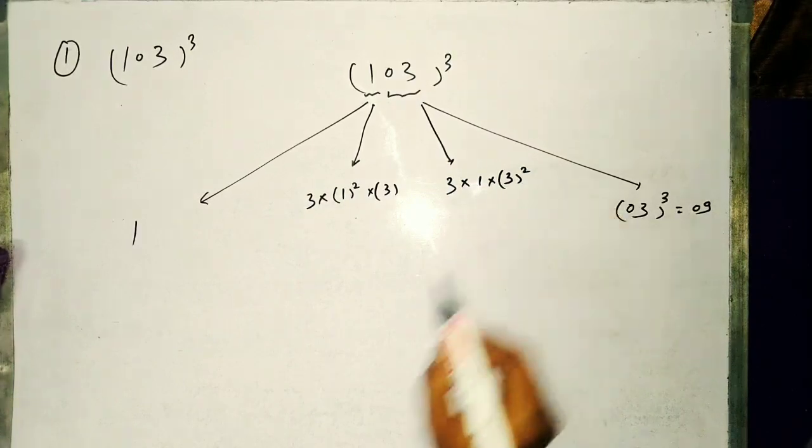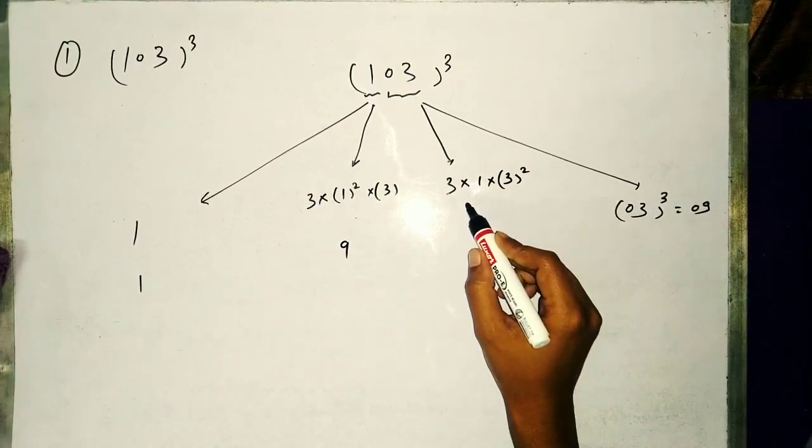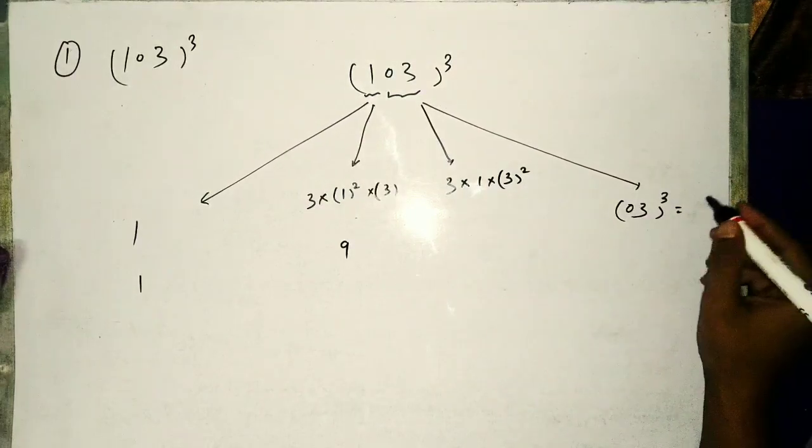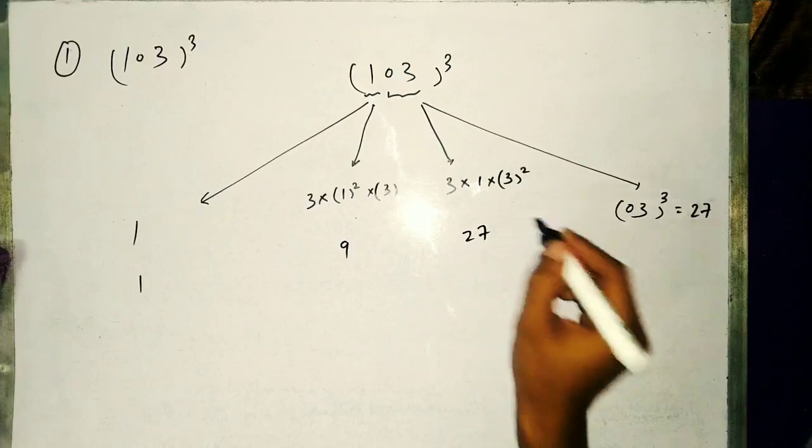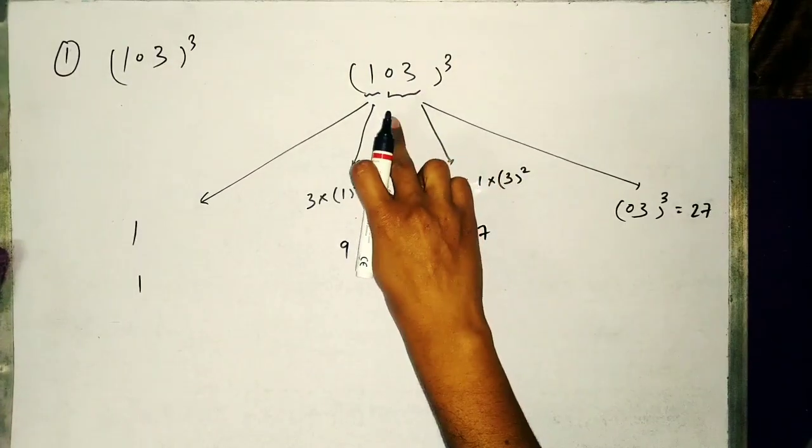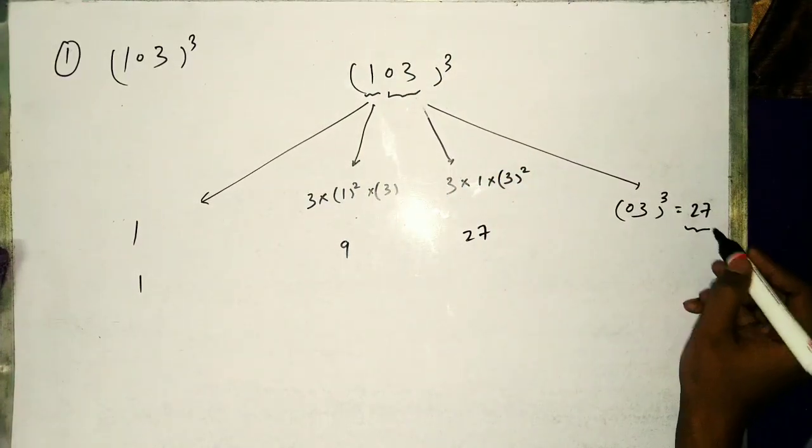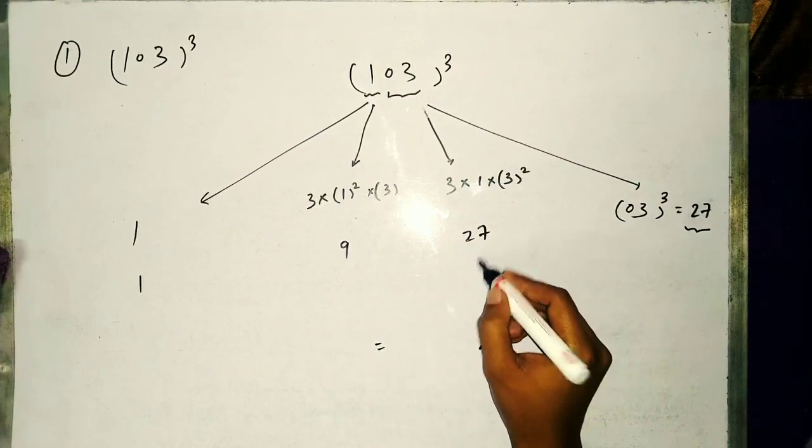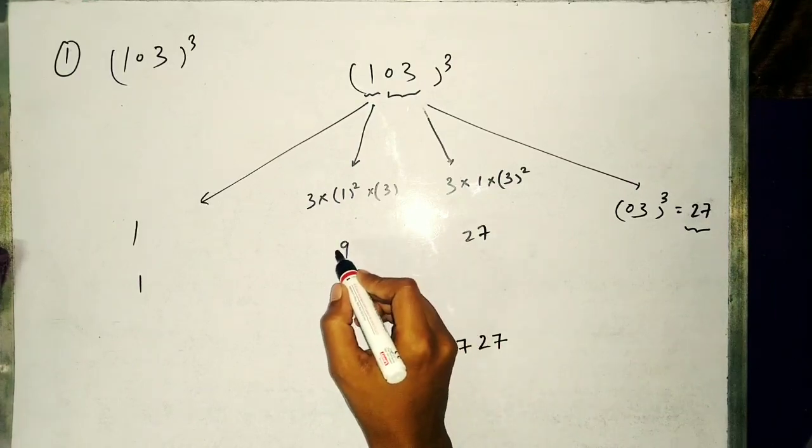Similarly, second step: 3 into first digit square into second digit, 3 into first digit into second digit square which is 9. 3 cube will be 27.